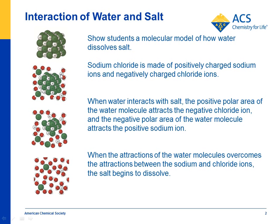The water molecules have a slightly negative area near the oxygen, and they attract the positive sodium ions. When you have enough water molecules doing that, it pulls the sodium ion away from the chloride ions and they go into solution. The same is true with the chloride ion — the positive part of the water molecules are attracted to the negative chlorine ion, and if enough water molecules surround it and attract it, it pulls it away and it goes into solution.